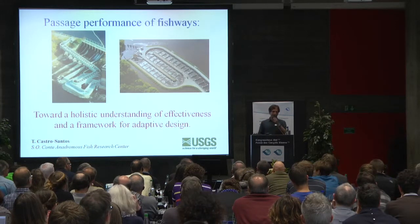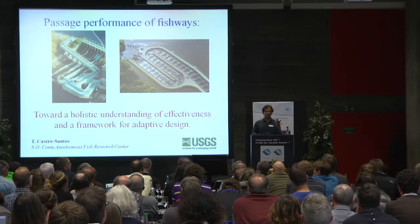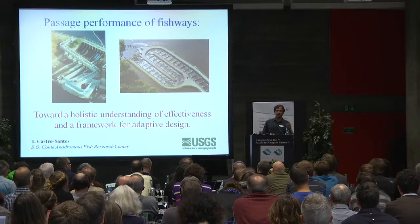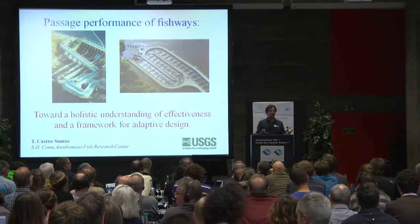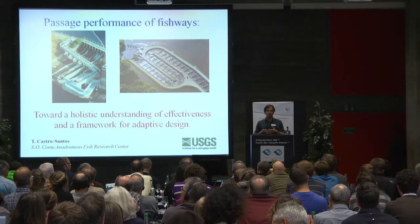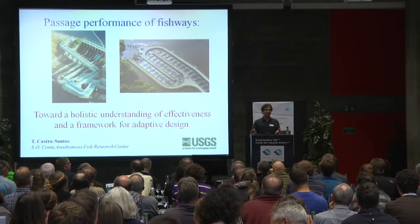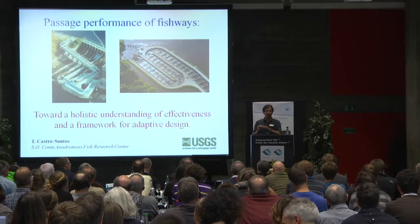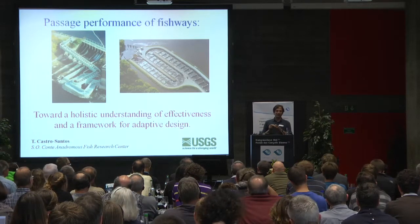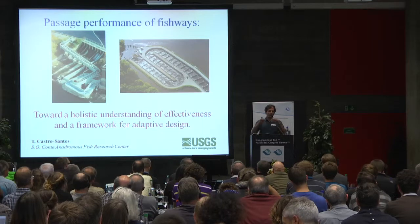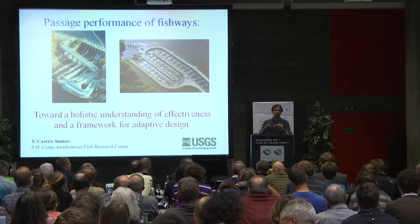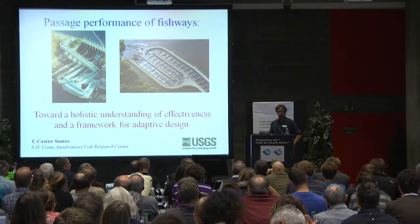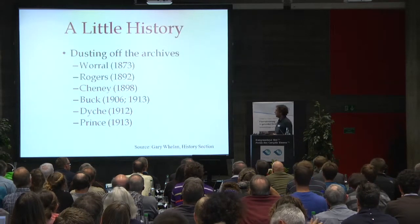One of the earlier speakers this afternoon already mentioned the problem of fishway evaluations that get done — it seems that everybody has their own idea of what to do. What I want to propose today is there's actually a right way to do this. There's maybe more than one, but there's a minimal right way to evaluate a fishway. And if we can all agree with some basic mathematics, we might be able to move toward a place where we can begin to compare fish ladders.